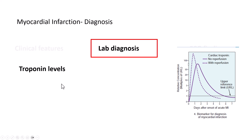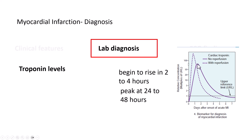Troponin levels begin to rise at around 2 hours after myocardial infarction onset, as seen on the graph, and peak at around 24 to 48 hours. The troponin level then gradually comes down and returns to the normal reference range at around the 6th or 7th day after the onset of acute myocardial infarction.